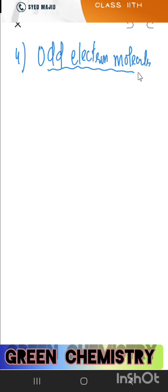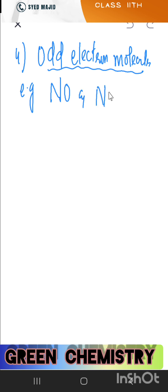Fourth exception: odd-electron molecules. Some molecules have an odd number of electrons. Examples: NO (nitric oxide) and NO₂. In these molecules, the octet rule is not followed because the total number of electrons is odd.